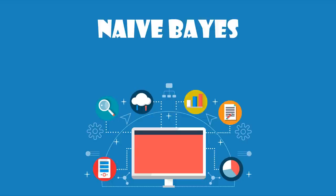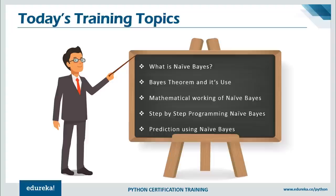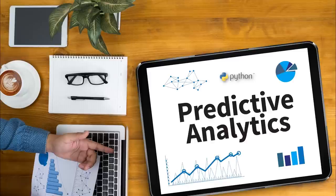So before moving forward, let's have a quick look at the agenda. I'll start off this video by explaining what exactly is Naive Bayes. Then we'll understand what is Bayes' Theorem, which serves as the logic behind the Naive Bayes algorithm. Moving forward, I'll explain the steps involved in the Naive Bayes algorithm one by one, and finally I'll finish off with a demo on Naive Bayes using the scikit-learn package.